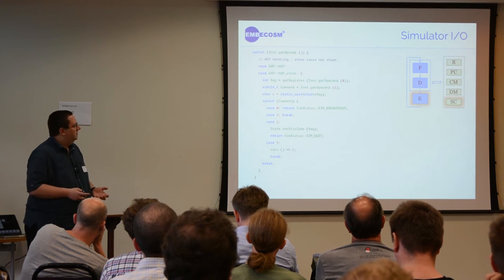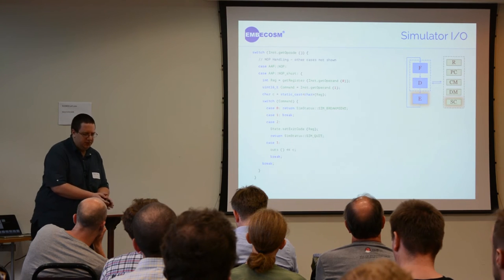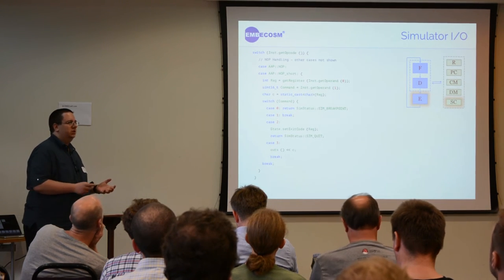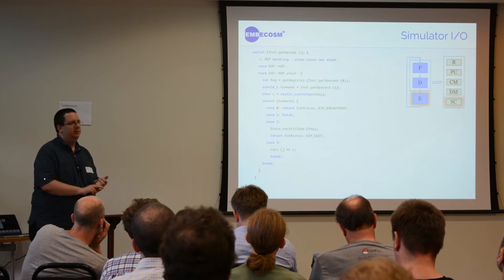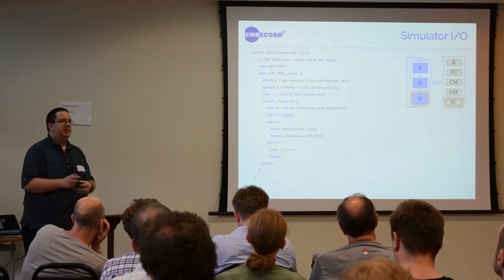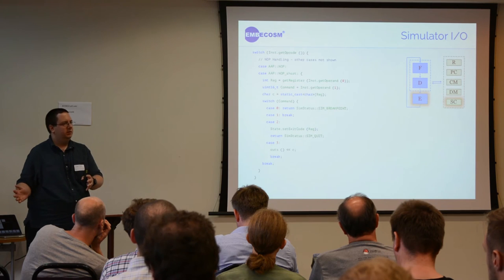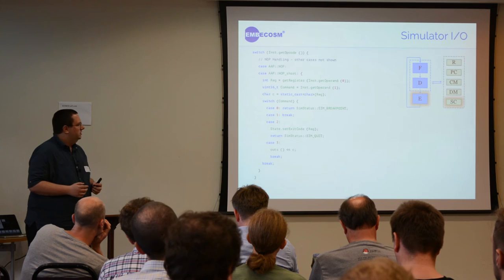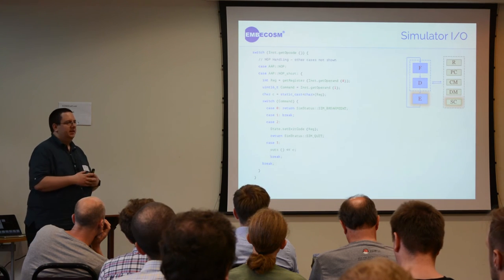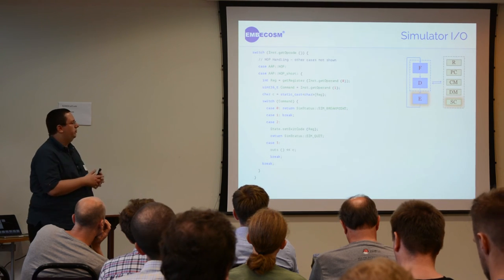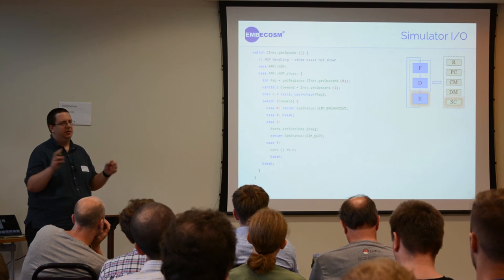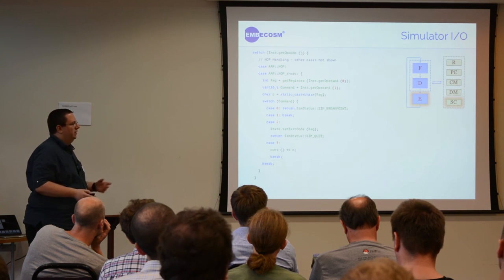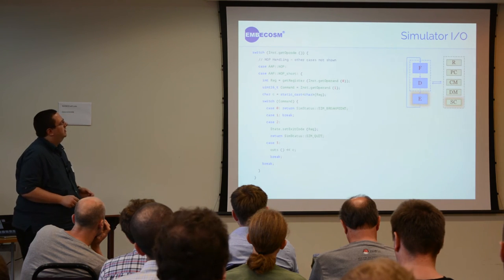The way we've designed AAP is to be nice for simulation. We're doing something similar to what OpenRISC does, where its NOP instruction takes a register and an immediate. Certain immediate values in the NOP instruction in the simulator do specific things. For instance, NOP2 is a signal to quit, NOP3 is to print the value in a register as a character to the screen, and we have similar things for standard out, standard error, and standard in.